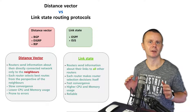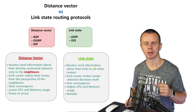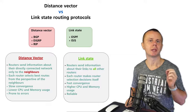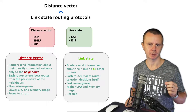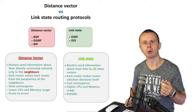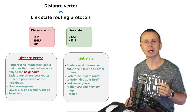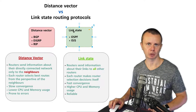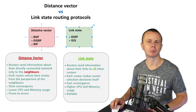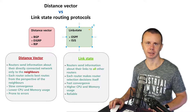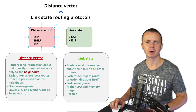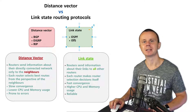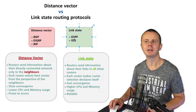In the previous lecture we discussed the difference between IGP protocols and EGP protocols, which answers where a routing protocol operates — either within an autonomous system or between autonomous systems. Now let's answer the question of how a routing protocol operates. There are two different types: distance vector routing protocols and link state routing protocols. Examples include BGP, EIGRP, and RIP as distance vector protocols, while OSPF and IS-IS are link state routing protocols.